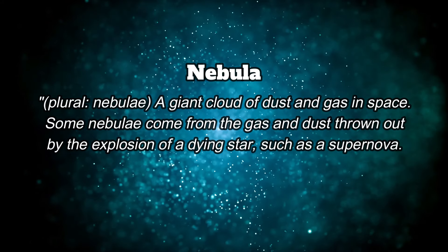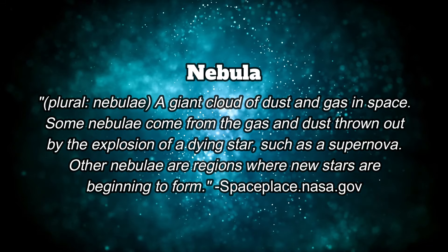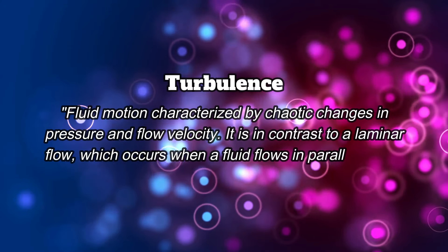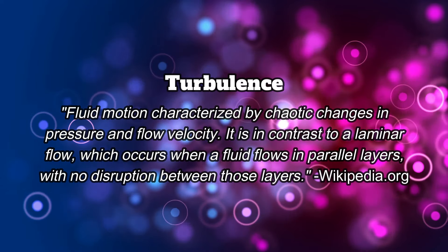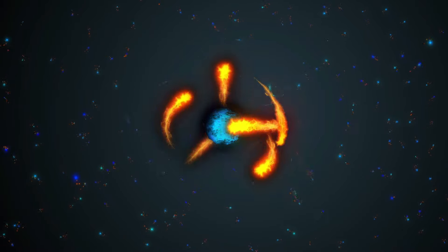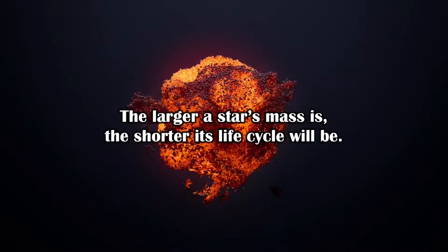Let's start at the beginning of the life cycle of all stars. Throughout our universe, matter and energy is scattered everywhere, often in the form of clouds of dust and gas called nebulae. These nebulae hold a small yet non-negligible amount of mass and therefore gravitational field. Depending on how much matter is gathered within this nebula phase will ultimately determine the future mass of the star — and the larger a star's mass is, the shorter its life cycle will be.